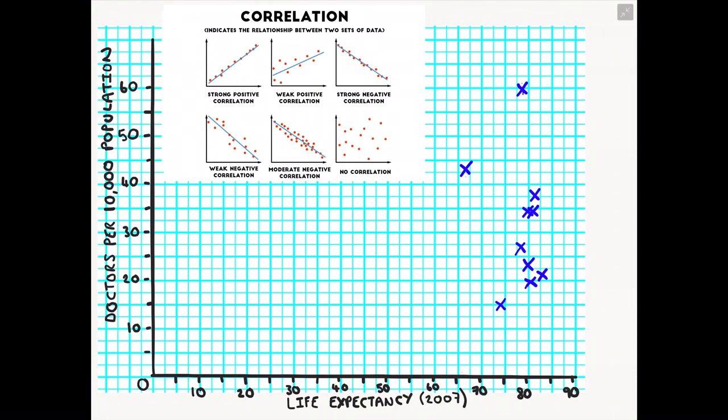And the closer these points are to each other on your scatter graph, the stronger the relationship between your data sets. And what that means is, is that one of your data sets may be influenced by your other data sets in a positive or negative way.